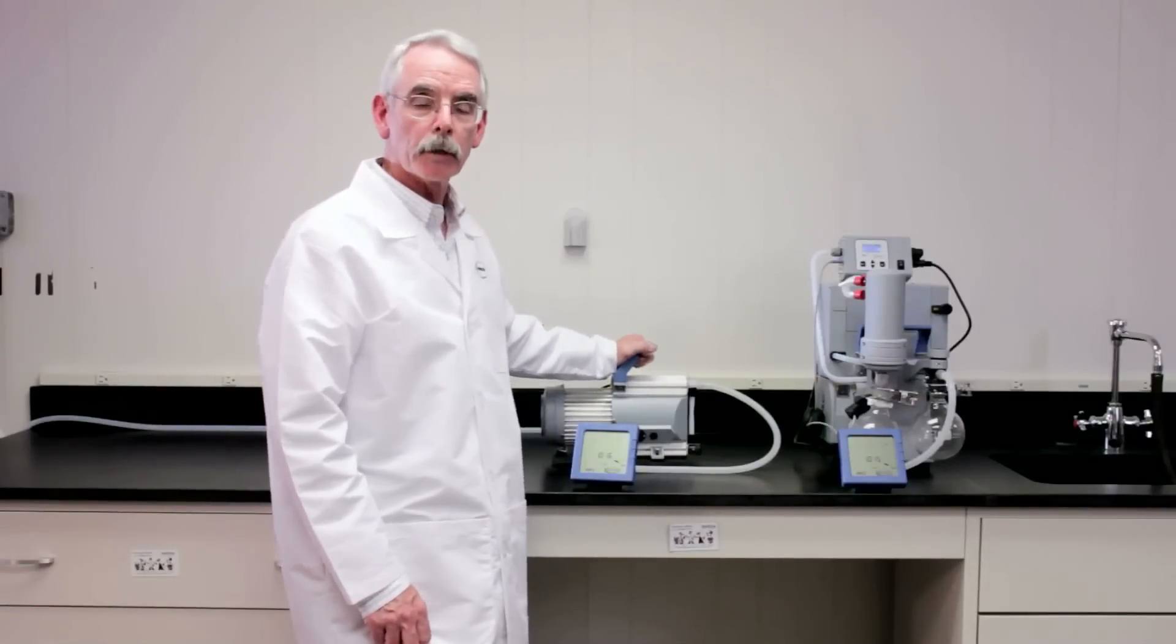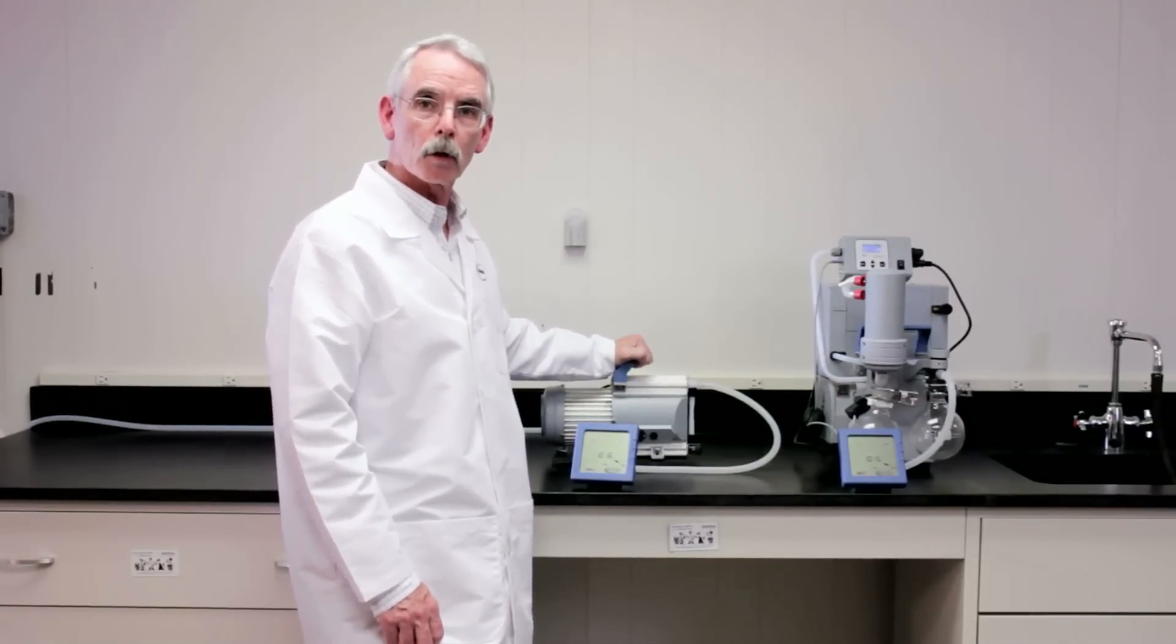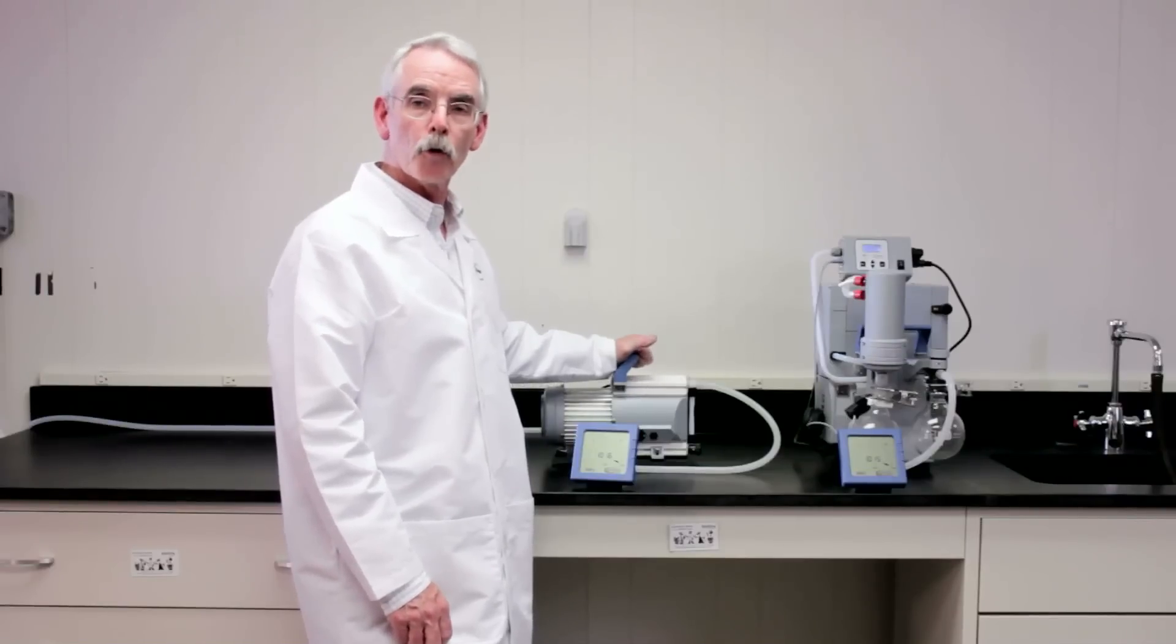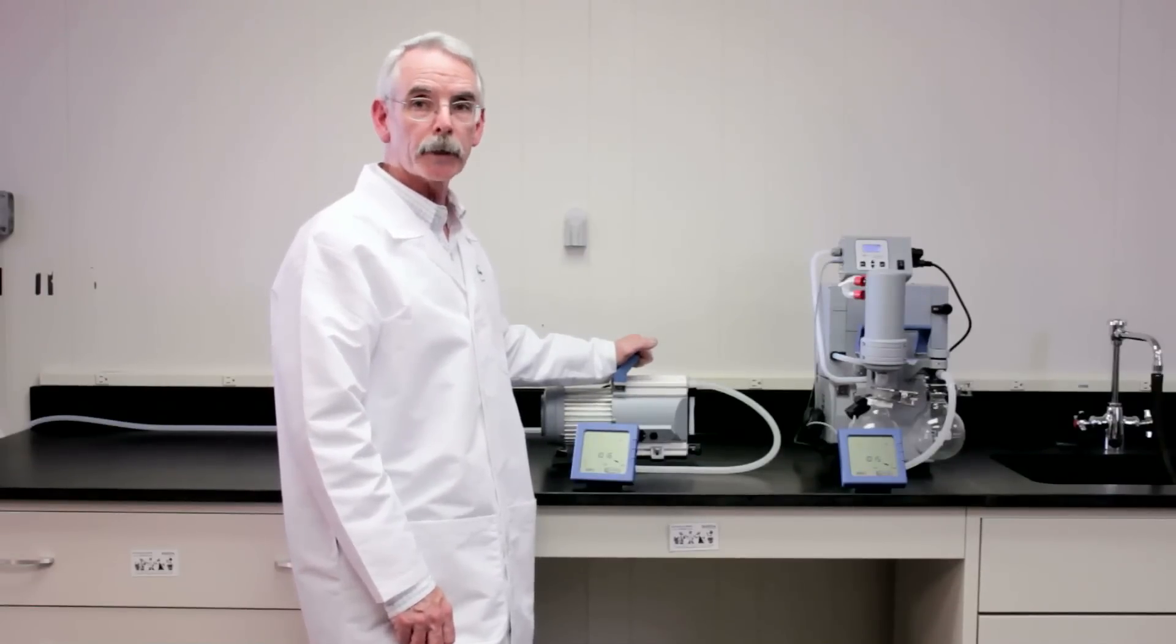Our second pump is the MD1C. This is a compact little workhorse pump with a 5 inch by 10 inch footprint that will deliver 2 millibar vacuum, that's 1.5 torr, 29.86 inches of mercury.